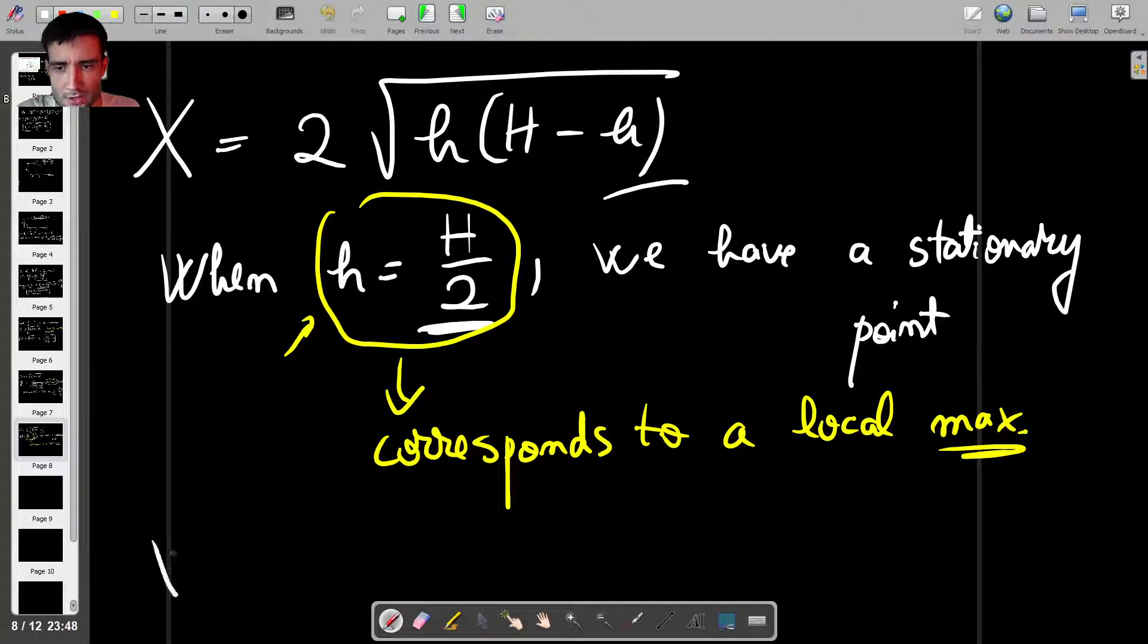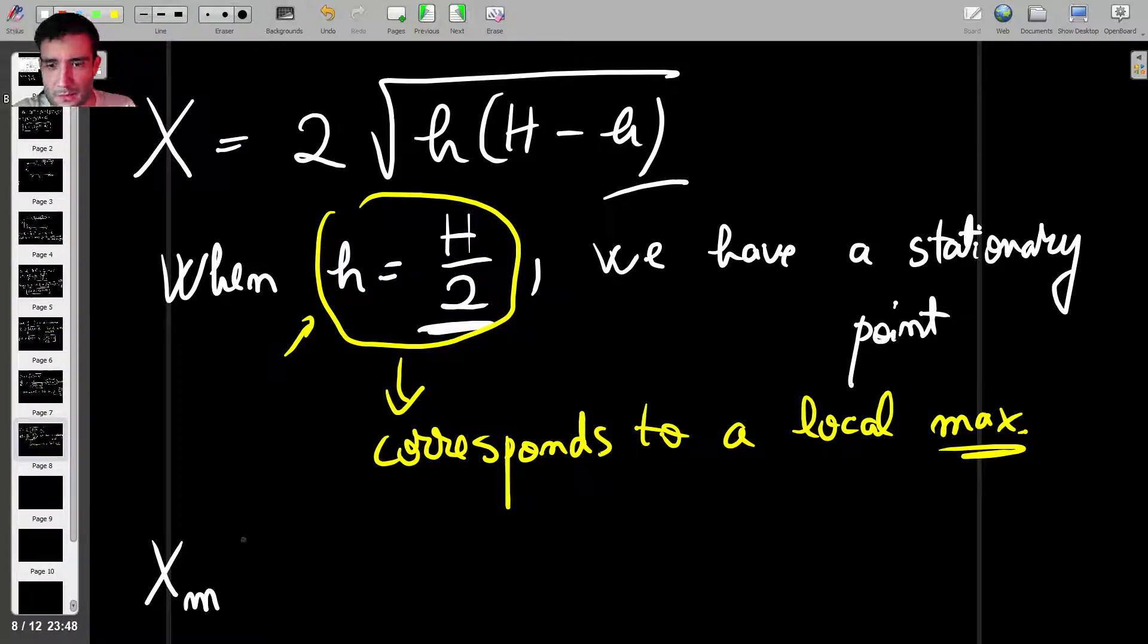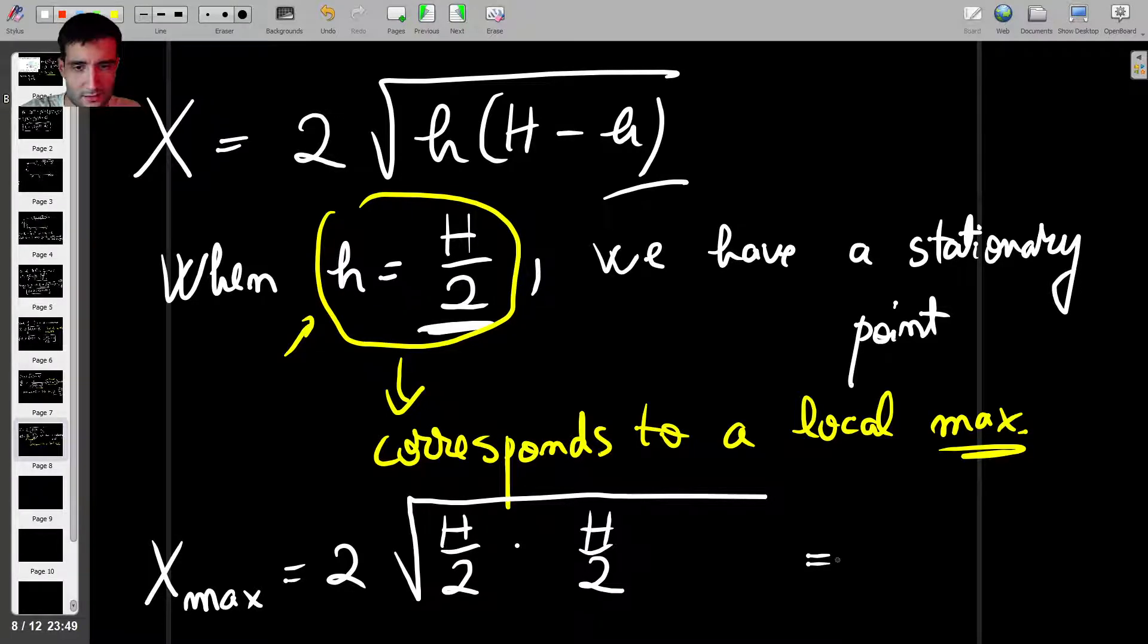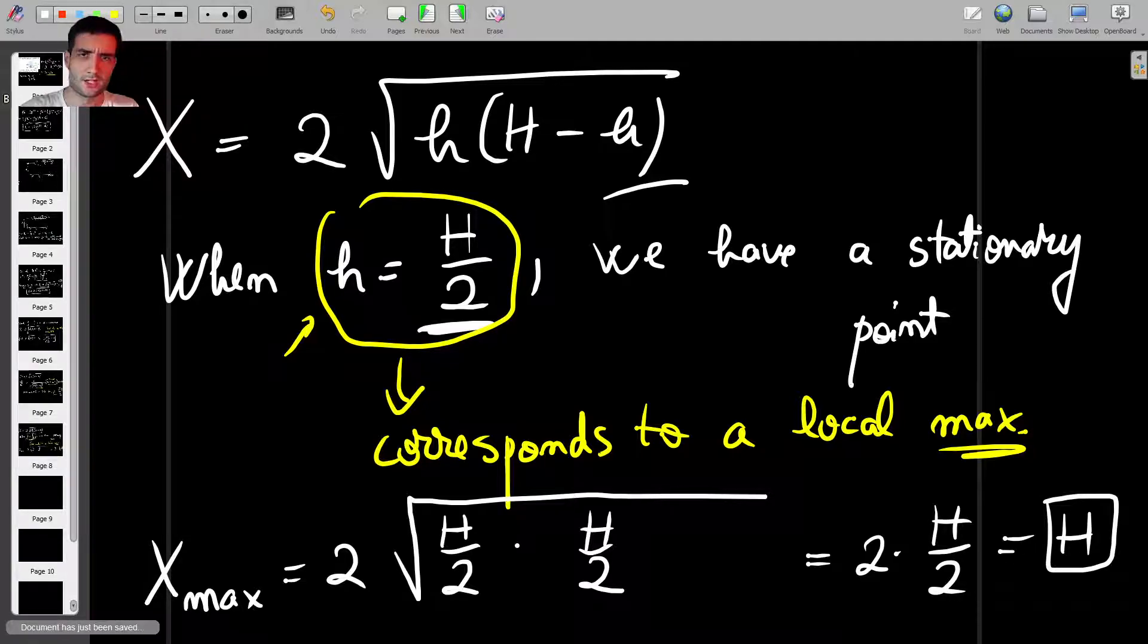And if you want, at this point, you can also find the value of the range. To find that you say, my maximum range is going to be equal to 2 multiplied by square root of capital H over 2 times capital H over 2. And then this will be 2 times capital H over 2, and you'll get the value of H, which is interesting. So it tells you that the maximum range the water will travel is actually the same as the height of the free surface.